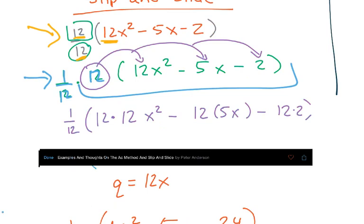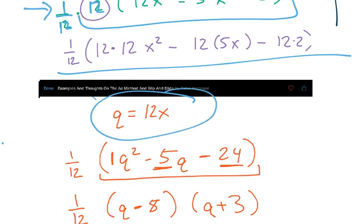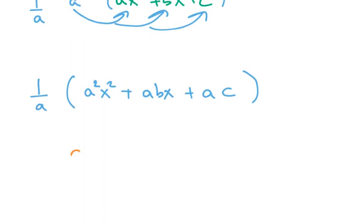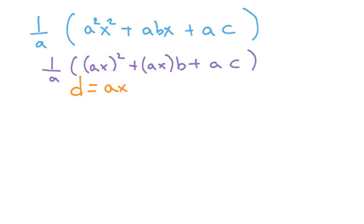What did I do from there? Well, what we'll see here is once we distributed it out, we replaced it with a different letter. We said q is equal to 12x. So now, I'm going to do the same thing. I'm going to say d, I'm going to use a different letter, d is equal to ax. And keep in mind that this right here is saying 1 over a. This is ax quantity squared plus ax times b plus ac. So if I substitute in d as ax, then these values here will become d.